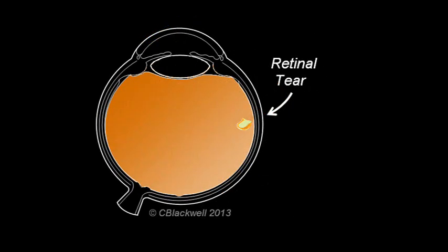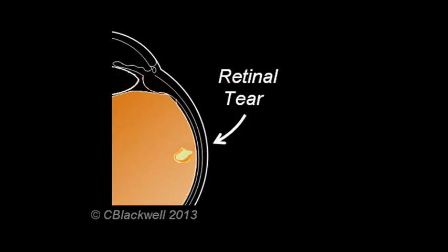This diagram is intended to show a more 3D view of the tear. In this closer view, you can see it is a small, elevated flap in the shape of a horseshoe. A key point here is the flap is elevated because the vitreous is pulling on it. How important is that?